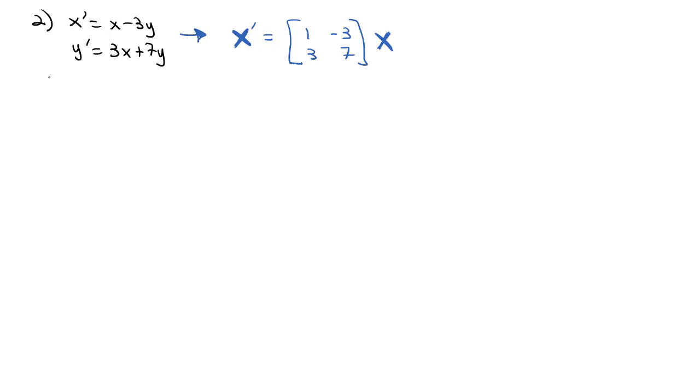Using the eigenvalue method, we have the determinant of 1 minus lambda, negative 3, 3, and 7 minus lambda, which is 1 minus lambda times 7 minus lambda minus negative 9, which makes it plus 9. Multiplying out, we get 7 minus lambda minus 7 lambda plus lambda squared plus 9 equals 0. So lambda squared minus 8 lambda plus 16 equals 0, which gives us lambda minus 4 squared equals 0. As expected, we've got a double root at lambda equals 4.